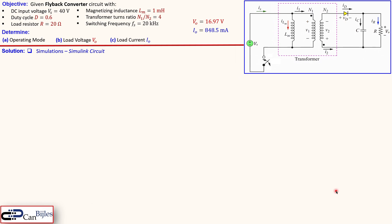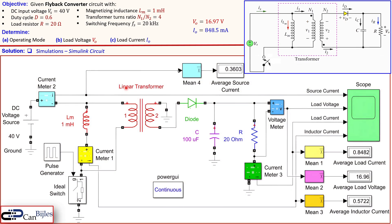Now let's look at the simulation results in Simulink. The circuit includes the input voltage source, the magnetizing inductance for the transformer model, a linear transformer with turns ratio 4:1, an ideal switch with a pulse generator set to duty cycle 0.6 at 20 kHz, a diode, a 100 µF capacitor, and the 20 Ω load resistor. Measurement blocks capture average inductor current, average load voltage, average load current, and average source current.